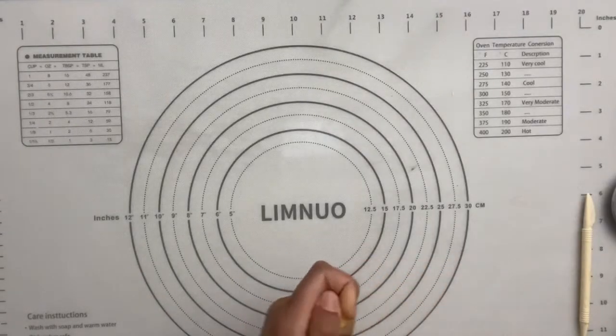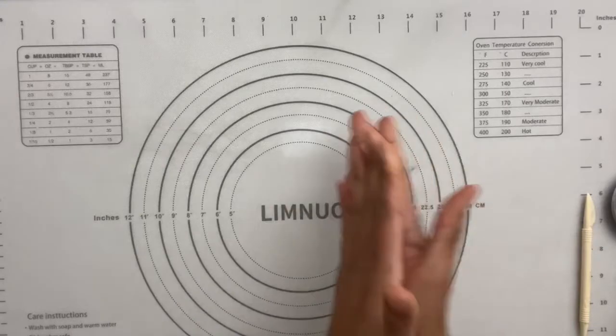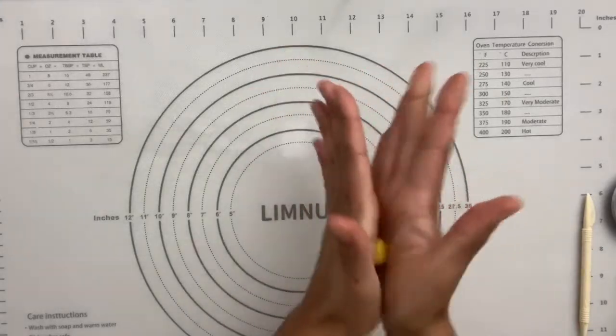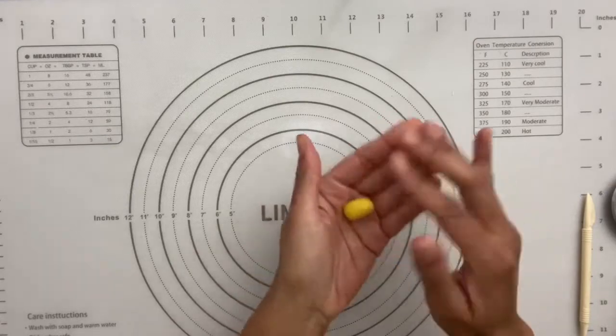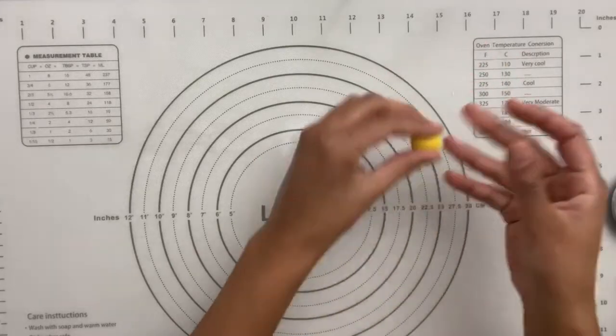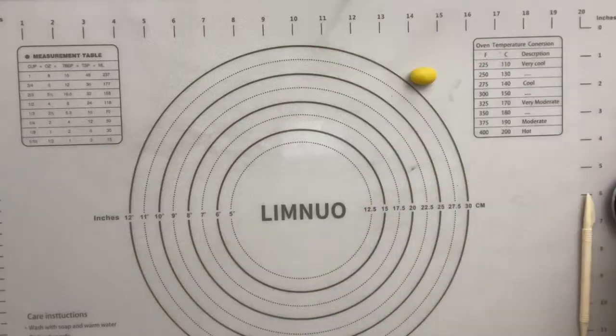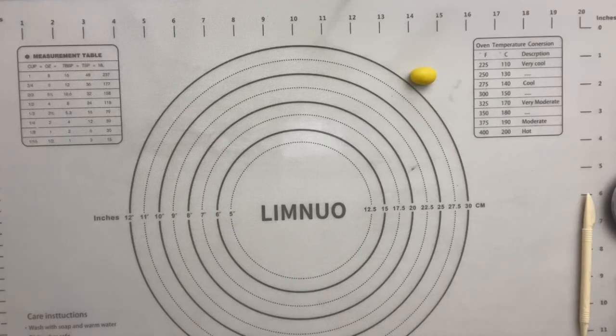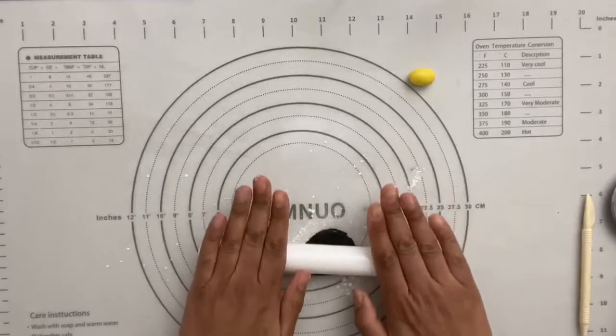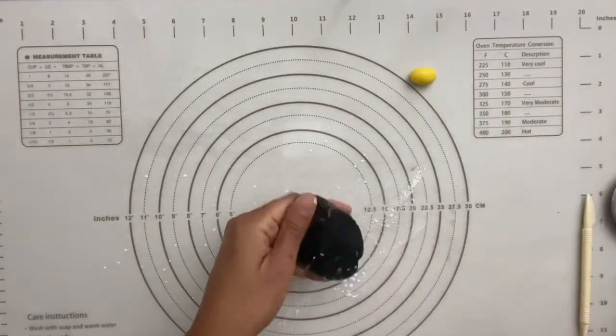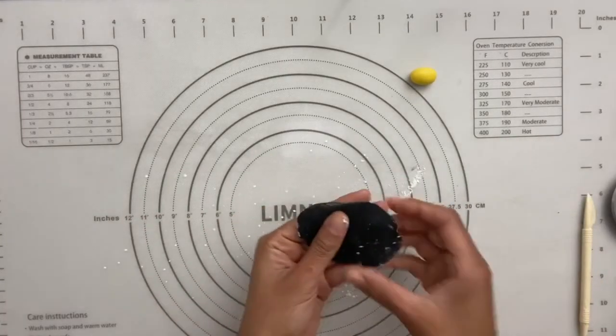So to start your bees, you are just going to take a little bit of yellow fondant and you're going to roll it into a sort of little pill shape like that. Then all you have to do is take some black fondant and I'm going to roll it really thin.